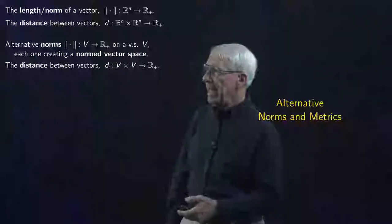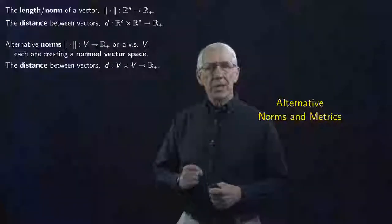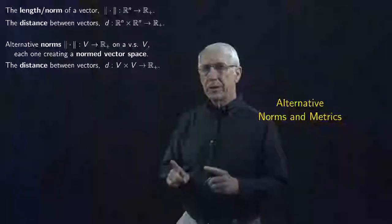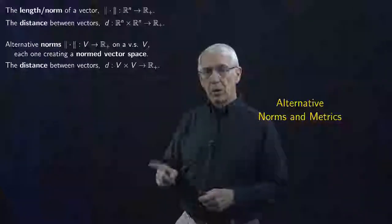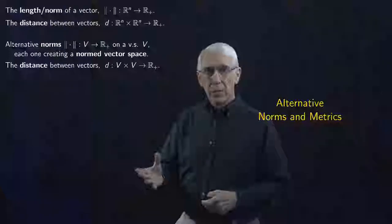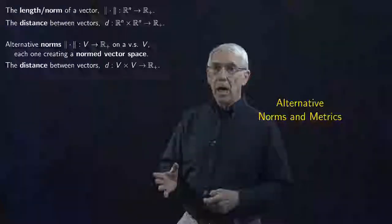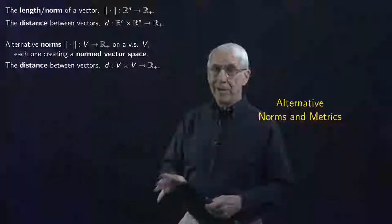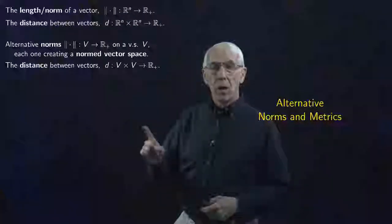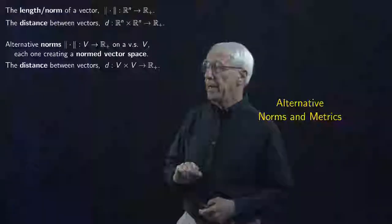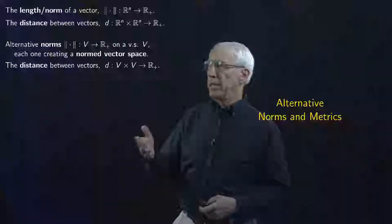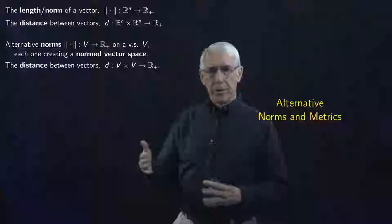What we're going to do today is define some different norms — some alternative norms on Rn — and in fact, we'll define things in a way that allows us to also define alternative norms on other vector spaces, which will be important because we've seen there are lots of vector spaces that aren't Rn. Then we'll define the notion of distance between vectors in the same natural way: the norm of the difference between the two vectors.